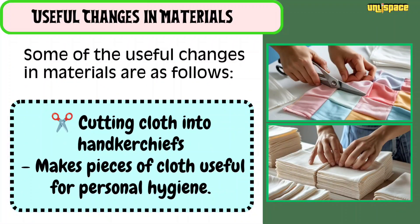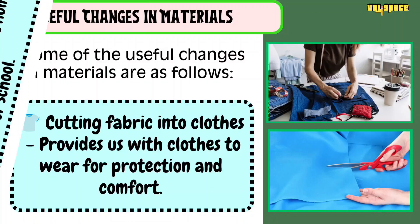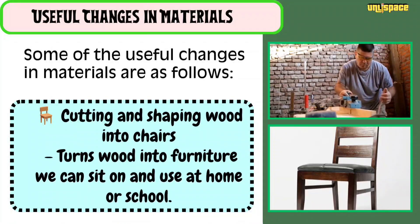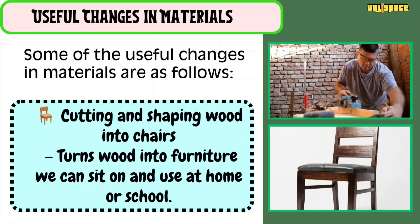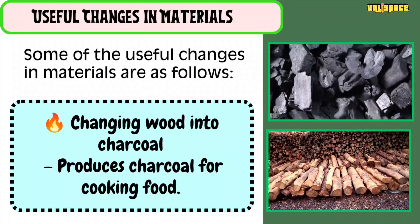Some of the useful changes in materials are as follows: Cutting cloth into handkerchiefs makes pieces of cloth useful for personal hygiene. Cutting fabric into cloths provides us with clothes to wear for protection and comfort. Cutting and shaping wood into chairs turns wood into furniture we can sit on and use at home or school. Cutting wood into charcoal produces charcoal for cooking food.